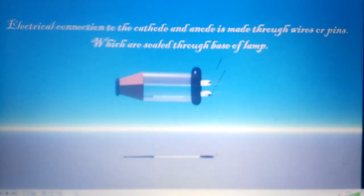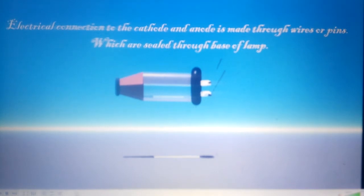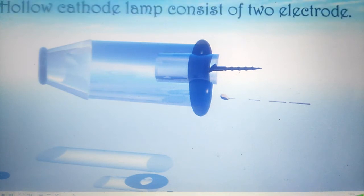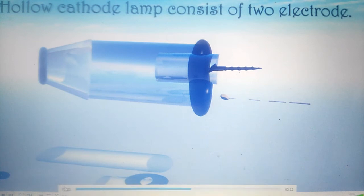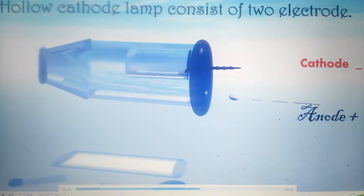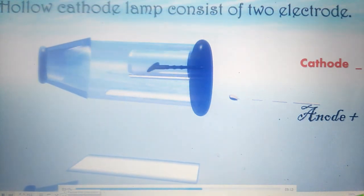Electrical connections to the cathode and anode are made through wires or pins which are sealed through the base of the lamp. The cathode is connected to the negative terminal and the anode is connected to the positive terminal of the electric supply.